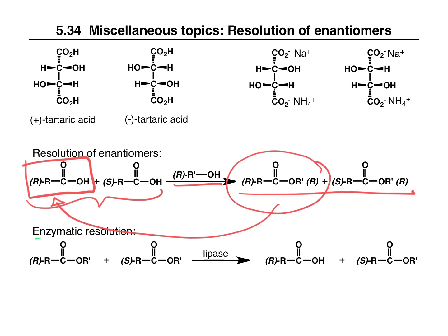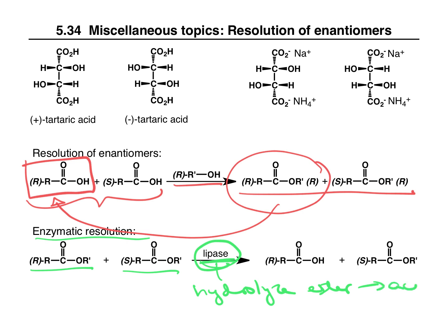Another approach would be an enzymatic resolution, taking advantage of enzymes that might react with a single enantiomer and not its mirror image. So let's say we have an R ester and an S ester. If we treat this with lipase, lipase is going to hydrolyze the ester to give a carboxylic acid. The lipase is going to react with only one enantiomer — in this case, the R ester is hydrolyzed to give the R acid, while the S ester is unchanged. Now we have very different compounds — one is still an ester and one is a carboxylic acid — so separation is going to be a lot easier.